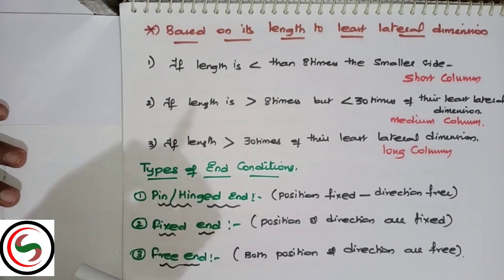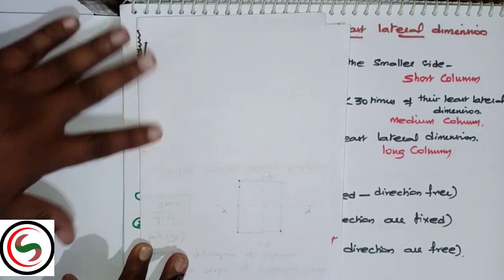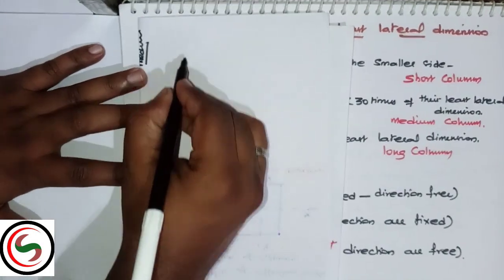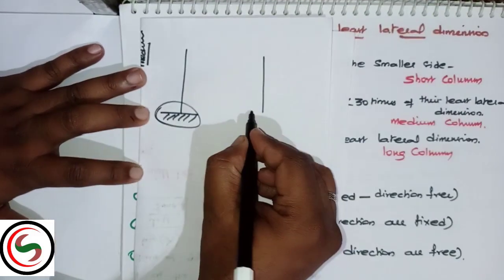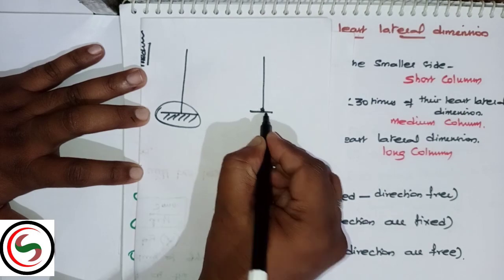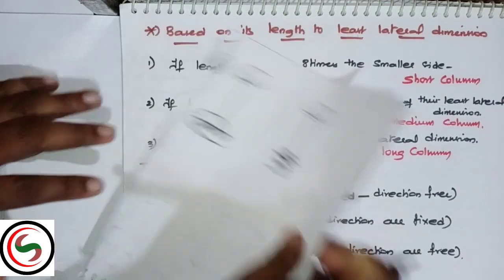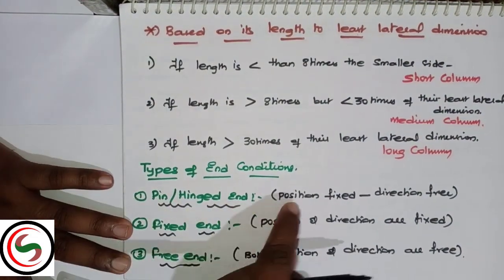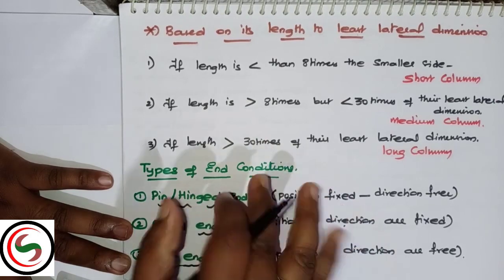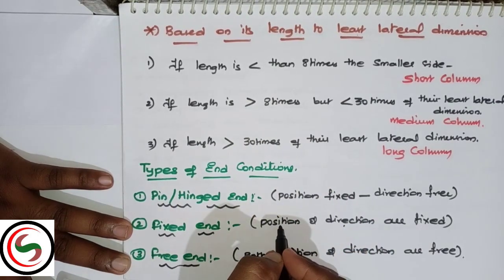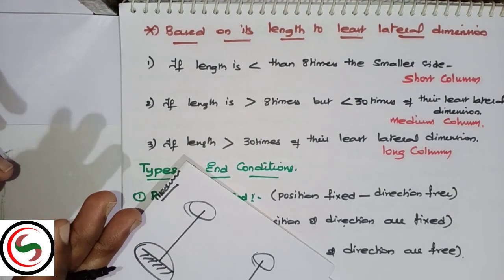Types of end conditions: fixed-fixed condition, pin or hinged condition, and free condition. Pin or hinged means rotation is allowed but no movement in direction. Fixed means no rotation and no movement in direction. Free means no constraints.